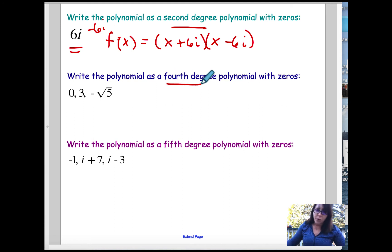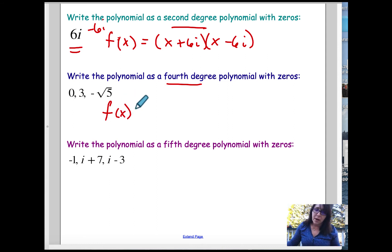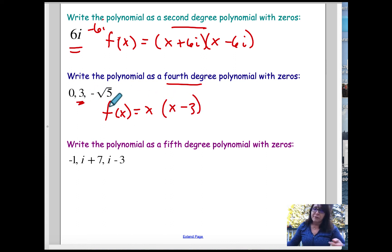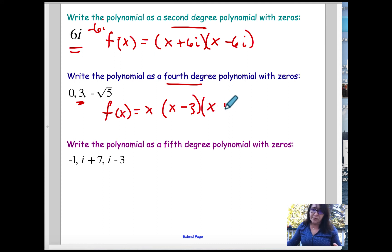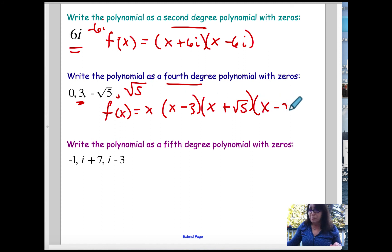For this problem, it's a fourth-degree polynomial but only three zeros were given. You've got x (from the zero at 0), x minus 3, and for root 5 and negative root 5 — like imaginary numbers, irrational numbers also have conjugates. So this would be x plus root 5, and the missing conjugate is x minus root 5. Leave your answer as a product of linear factors.